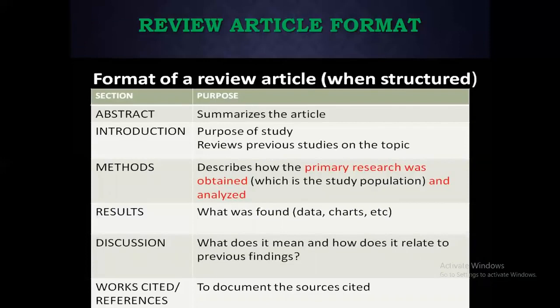Regarding the review article format, just like an original research work, the format includes title, abstract, introduction, methods, results, discussion, and references. The format is the same, but in an original research work your own work is presented, whereas in a review article, the work of other people is written in a well-patterned, systematic manner — that is the difficult procedure.